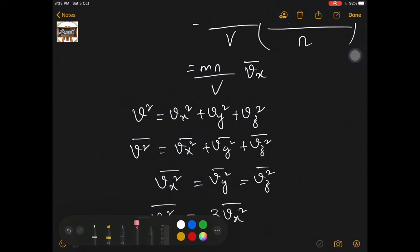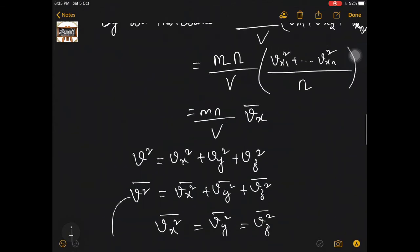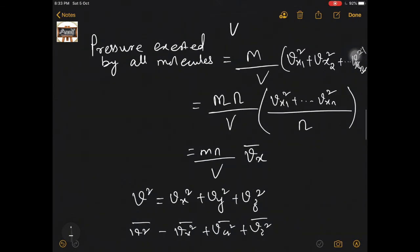So I can write this equation as V̄² = 3·V̄x², because the three components are equal. From this equation, V̄x² is nothing but (1/3)·V̄², which I will make use in this expression for pressure exerted by all molecules.